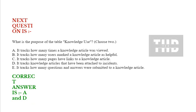Next question: What is the purpose of the table knowledge use? Choose two options. Option A: it tracks how many times a knowledge article was viewed. Option B: it tracks how many users marked a knowledge article as helpful. Option C: it tracks how many pages have links to a knowledge article. Option D: it tracks knowledge articles that have been attached to incidents. Option E: it tracks how many questions and answers were submitted to a knowledge article. Correct answer is Option A and Option D.